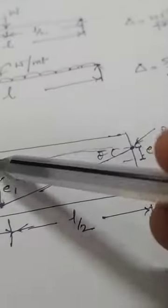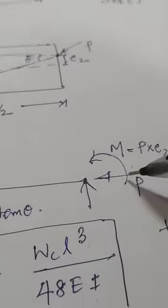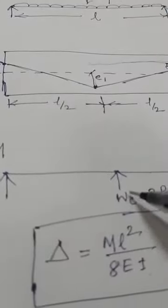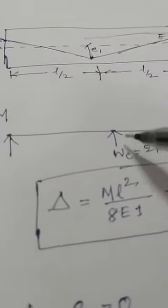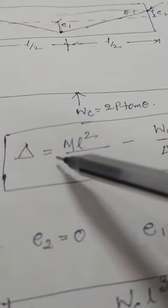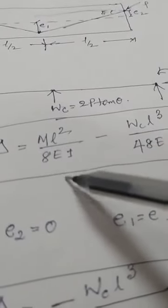In the triangle, the opposite side is e1 plus e2 and the adjacent is L/2, so tan θ equals (e1 + e2) divided by (L/2). This point load is created due to the triangular cable profile. This case will create two deflections: one due to the end moment M and another due to this point load. The point load creates an upward deflection.